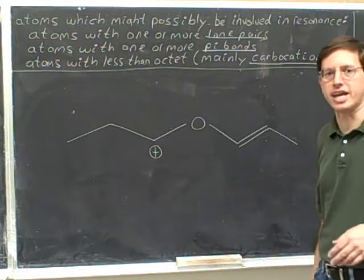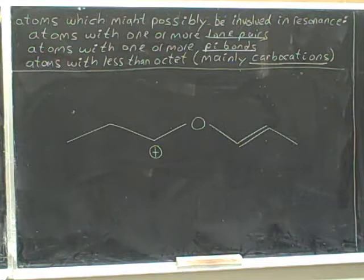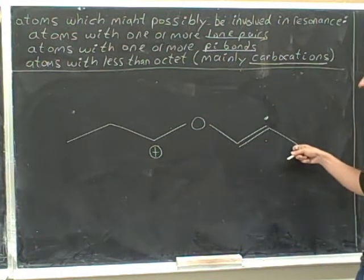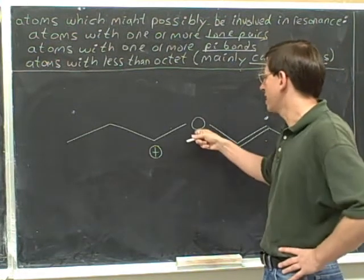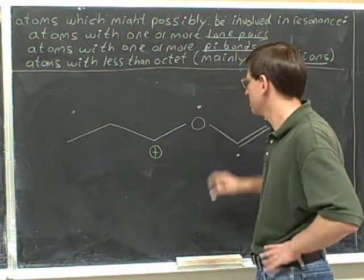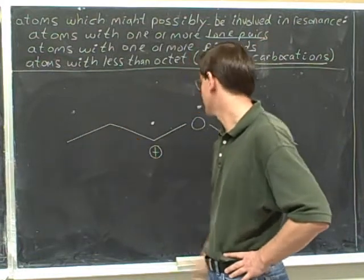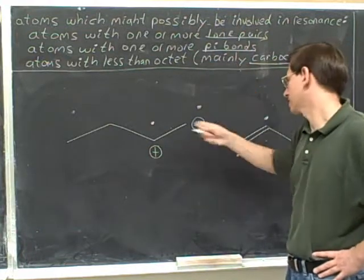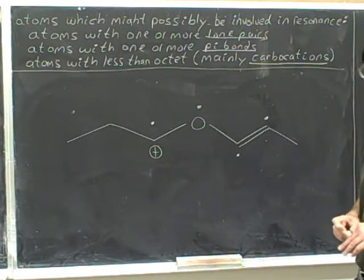Try this example — place dots on the atoms that can participate in resonance. This carbon has a pi bond, so it can. This carbon cannot participate in resonance; it doesn't have any of these characteristics. This carbon has a pi bond. This oxygen has a lone pair, so it can participate in resonance. And here we have a carbocation, so this can participate in resonance. These two don't have any of the characteristics. These four qualify, so four atoms here can participate in resonance.